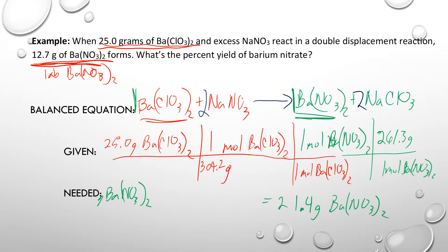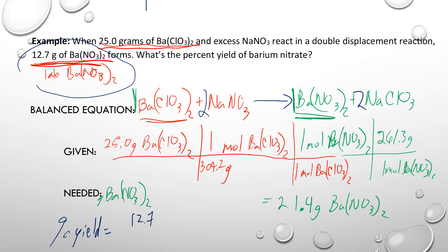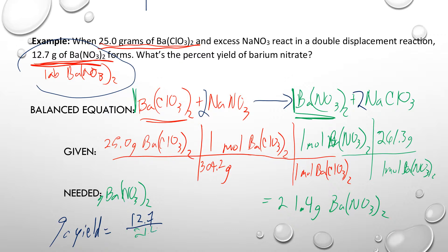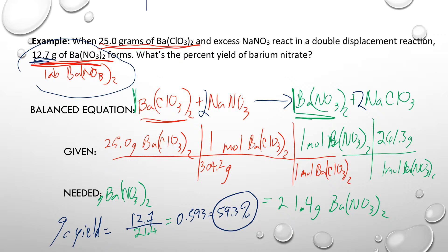So 21.4 grams is our theoretical expected yield — that's calculated. Our percent yield is what we got divided by what we expect. What we got is 12.7 grams, divided by what we expect, 21.4 grams, gives us 0.593 — which is 59.3%. You got 59.3% of the material you expected from 25 grams of barium chlorate.